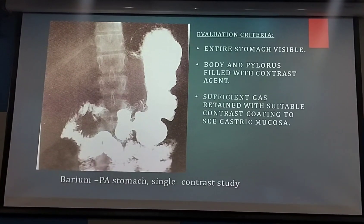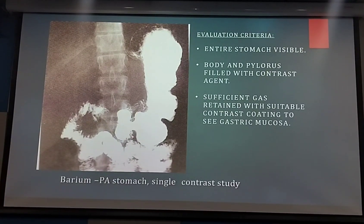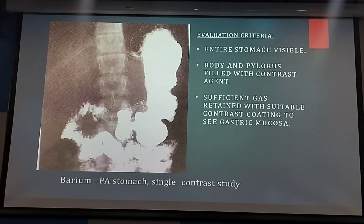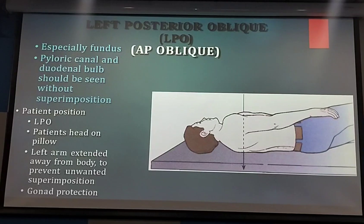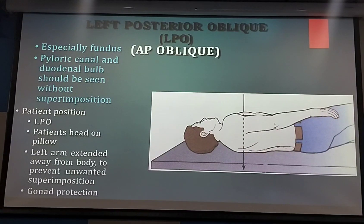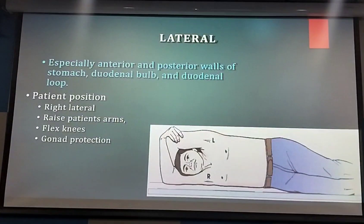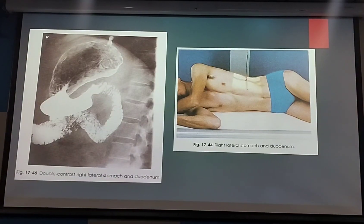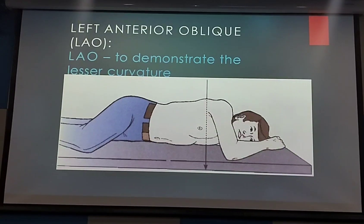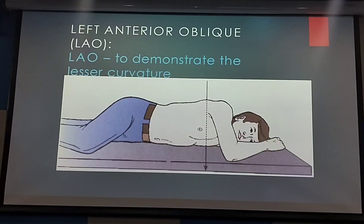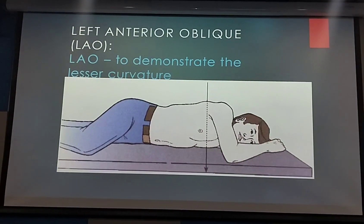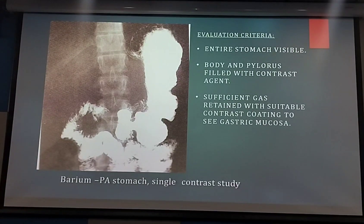The PA view is taken last. First we take the AP view, then rotate the patient — oblique view, left posterior oblique view — then PA last. Angulation is seen in the oblique view, not the PA view. Usually within 20 minutes barium should reach the small intestine. In barium meal we evaluate only up to the proximal duodenum; if we evaluate up to the ileocecal junction, it is called barium meal follow-through.